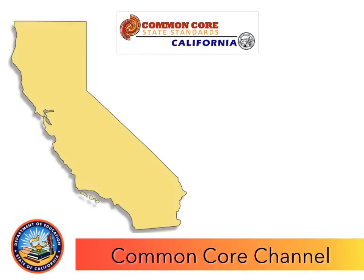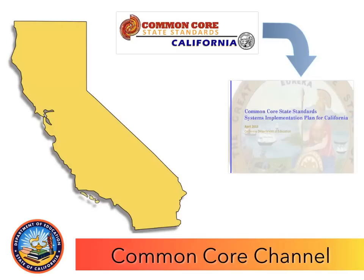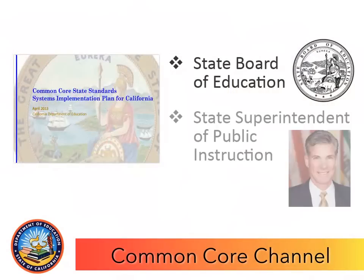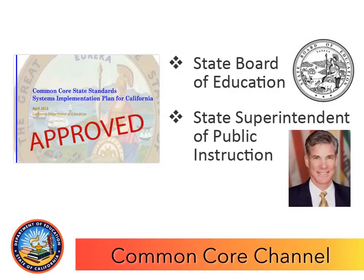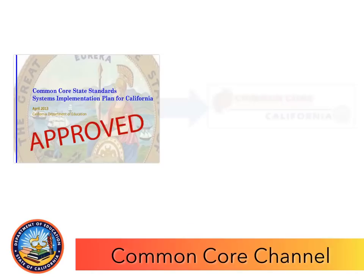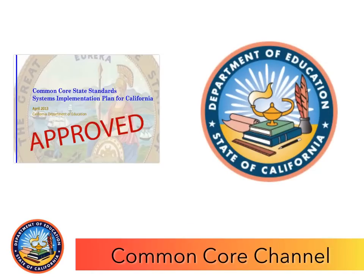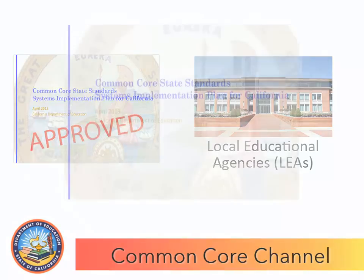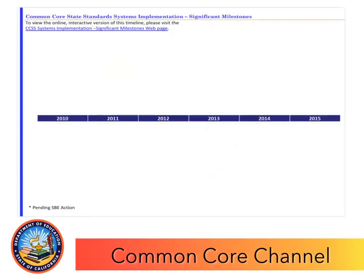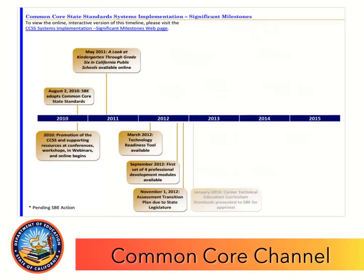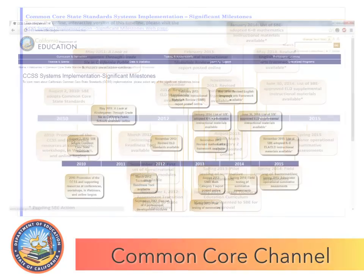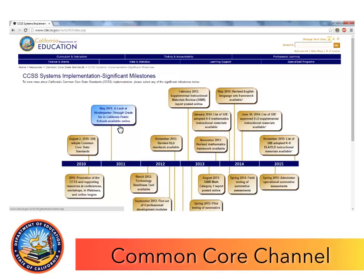The Common Core State Standards are being implemented in California using the Common Core State Standards Systems Implementation Plan for California. The State Board of Education and State Superintendent of Public Instruction approved this plan as a living document to guide the Common Core implementation work at the California Department of Education, or CDE. Local Educational Agencies, or LEAs, can also use the information in the plan to guide the development of their own local plans. The plan begins with a significant milestones timeline showing state-level activities and phases of the plan, providing a broad overview of statewide Common Core activities. An interactive version of this timeline is available on CDE's website.